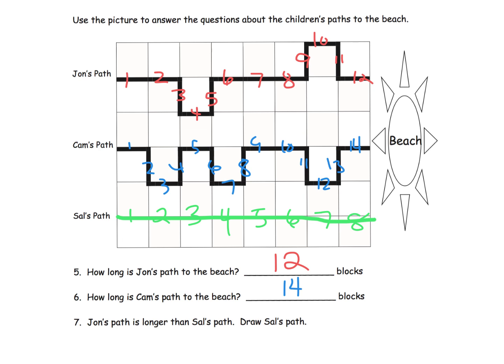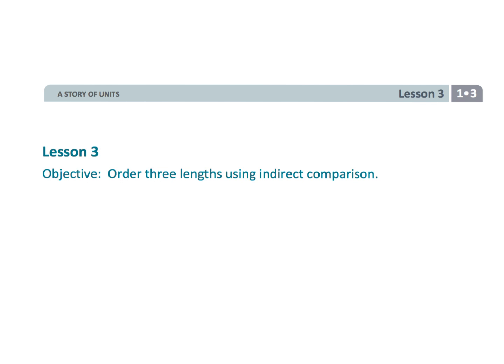That wraps up first grade module 3, lesson 3. We're ordering objects using indirect comparison.